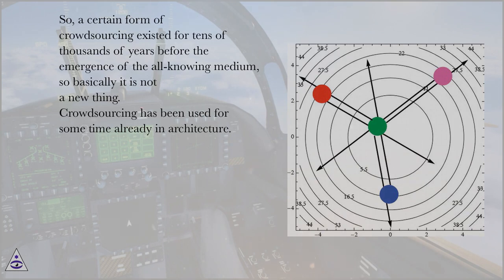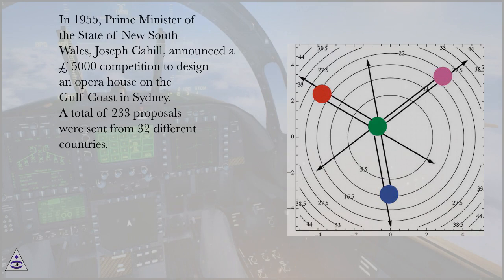Crowdsourcing has been used for some time already in architecture. In 1955, Prime Minister of the State of New South Wales, Joseph Cahill, announced a £5,000 competition to design an opera house on the Gulf Coast in Sydney. A total of 233 proposals were sent from 32 different countries.